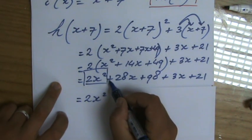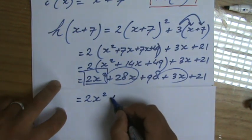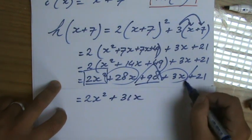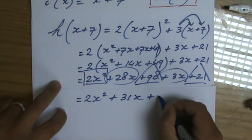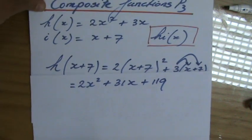I have plus 28x and plus 3x, so that is a positive 31x, and I have 98 plus 21, which is 119.